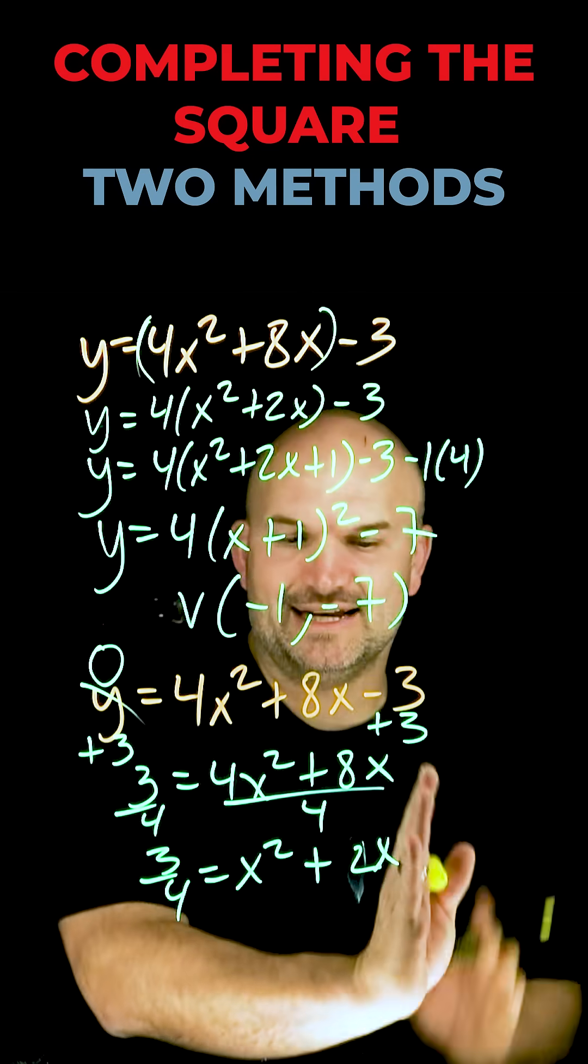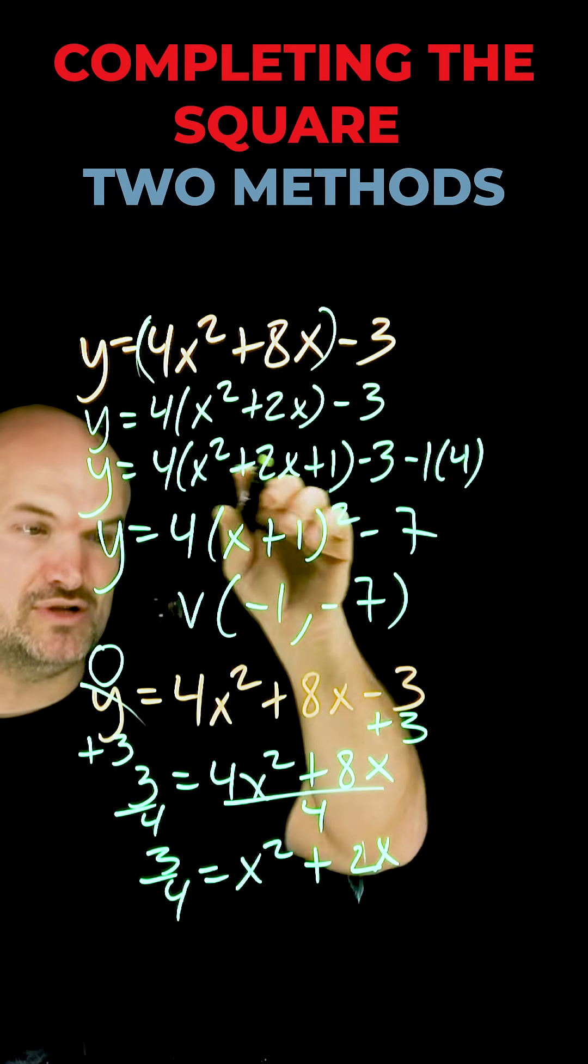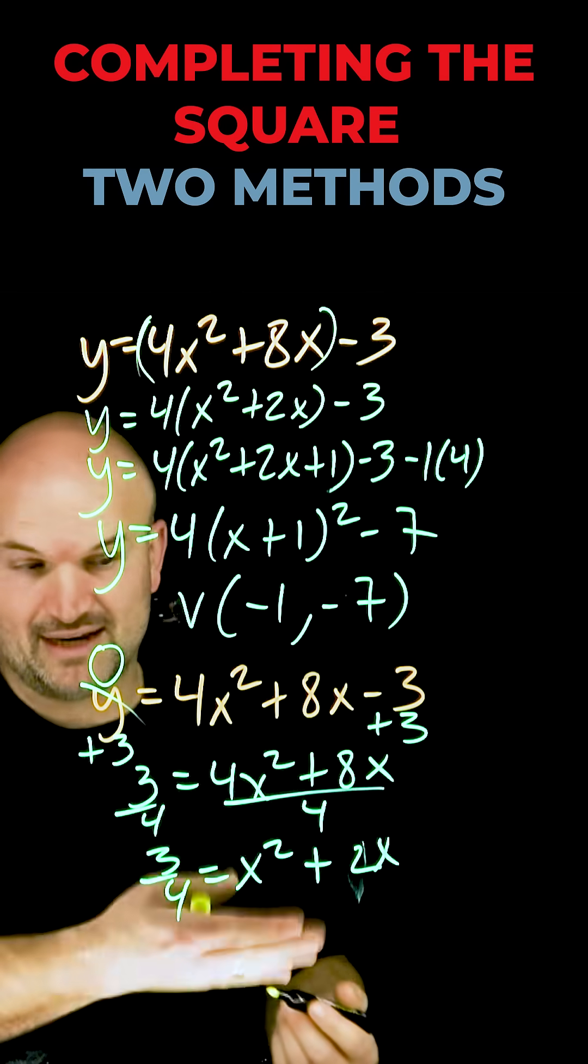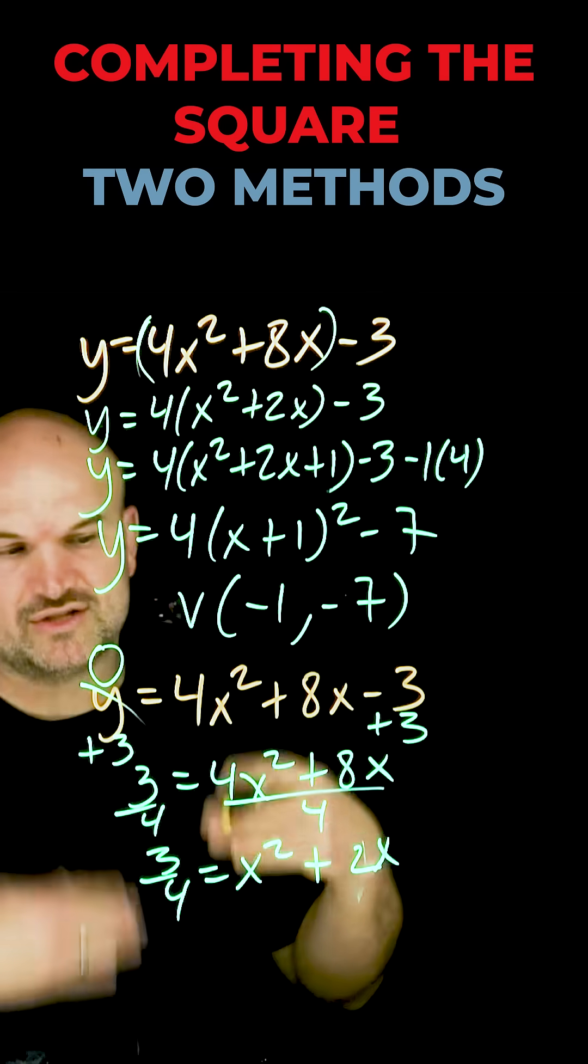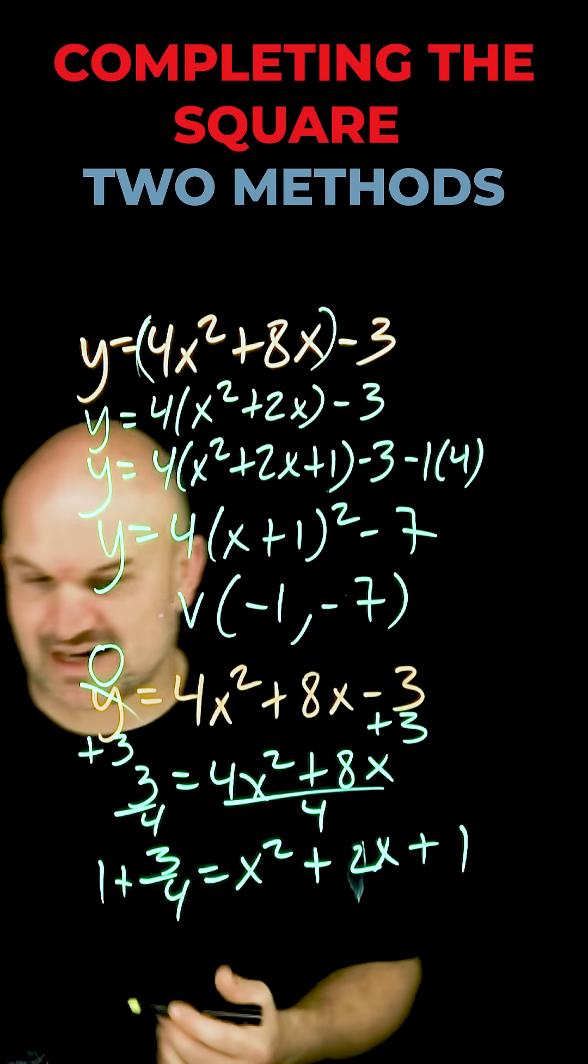But now in this case, rather than adding and subtracting on the same side like I did up here, now what I'm simply gonna do is find my value c. Again, 2 divided by 2 is 1. 1 squared is 1. I'm going to add a 1 to the right side and I'm also going to add a 1 to the left side.